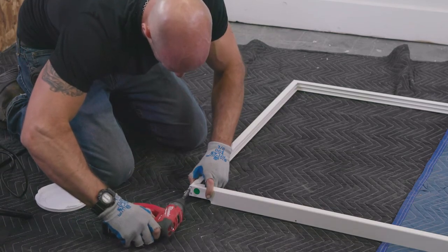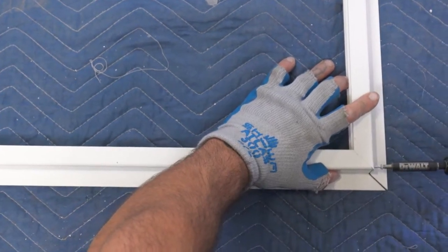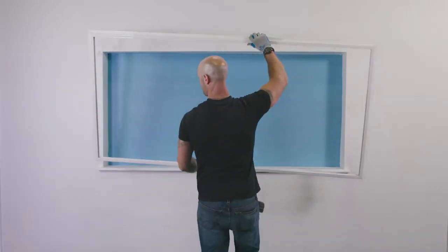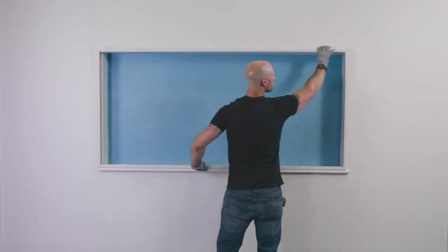Screw all four edges together. After assembly, dry fit it to the opening to check the fit. Make sure the frame is square to the opening and even on both sides.